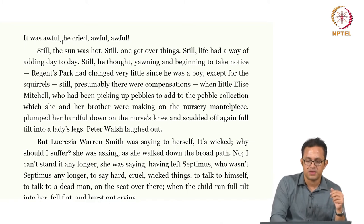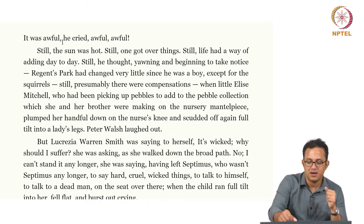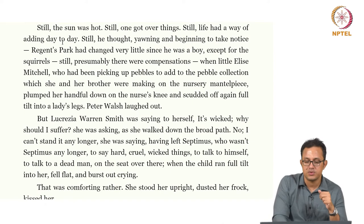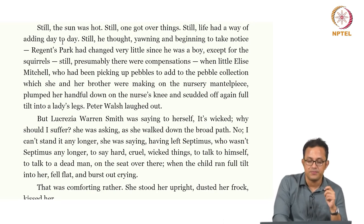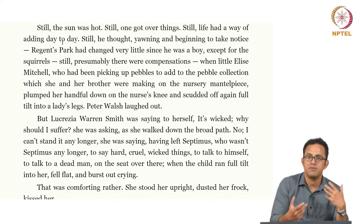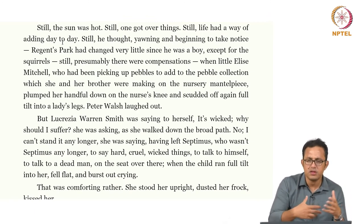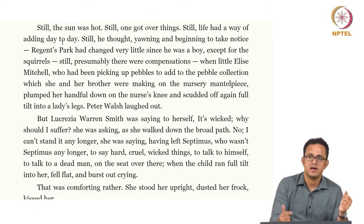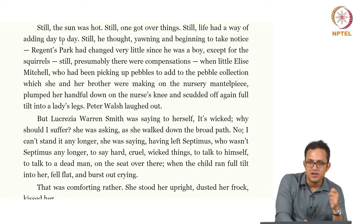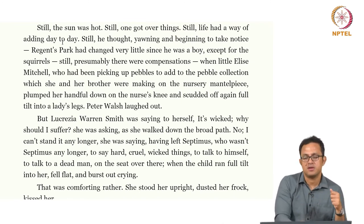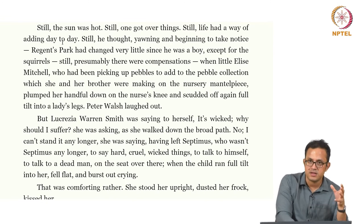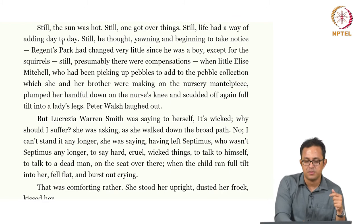The passage reads: 'Lucrezia Warren Smith was saying to herself, it is wicked, why should I suffer? she was asking, as she walked down the broad path. No, I cannot stand it any longer, she was saying, having left Septimus — who was not Septimus any longer — to say hard, cruel, wicked things, to talk to himself, to talk to a dead man on a seat over there.' The whole idea of not being a mother is something she has internalized as part of womanhood, and she has this effectively dead husband in front of her. Septimus is a hollowed-out man, not the same man he used to be.